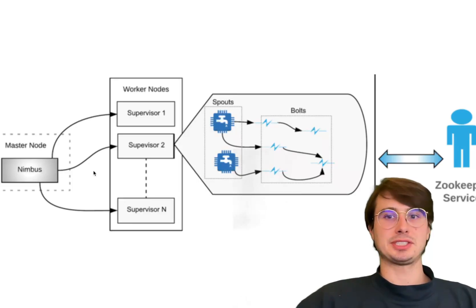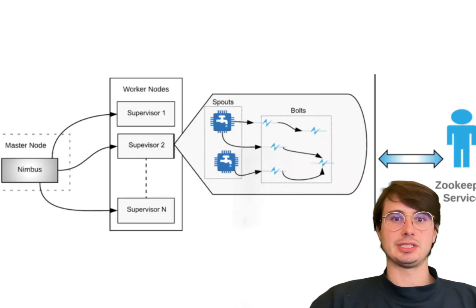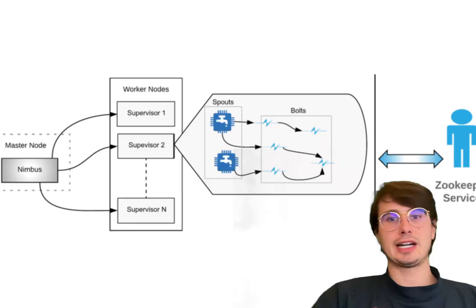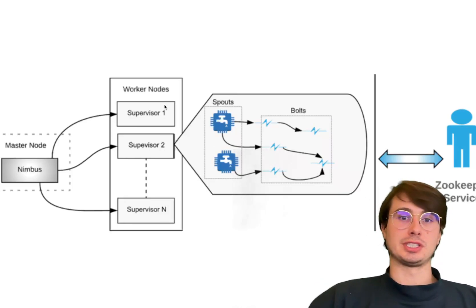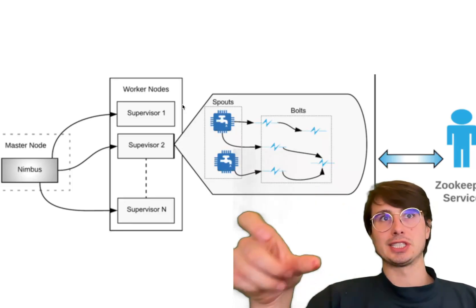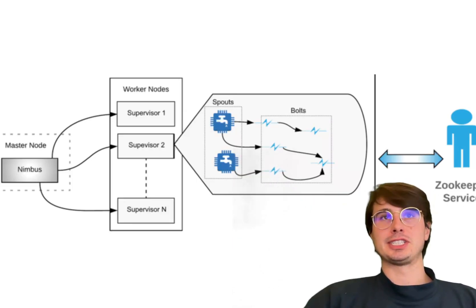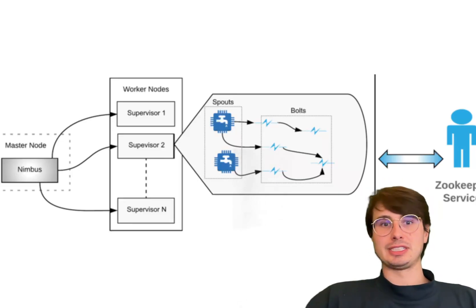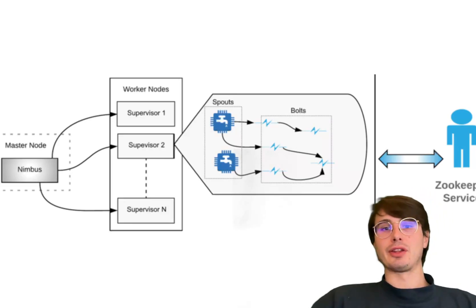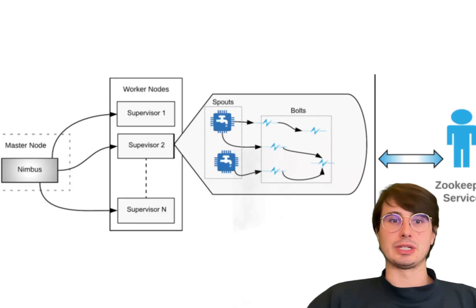Setting up Storm in production involves configuring a cluster with a Nimbus master node and a series of supervisor worker nodes. The Nimbus node manages topology submissions, understanding data routing and resource allocation for each supervisor node, while the supervisor nodes actually execute the tasks. Storm's fault tolerance works by retrying and replaying failed tuples — if a transfer from a spout to a bolt fails, it retries, achieving the at-least-once guarantee. For exactly-once guarantees you'd need to use other configurations like Trident. Monitoring is typically done via the built-in UI or a Prometheus/Grafana stack.